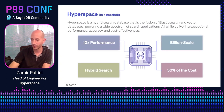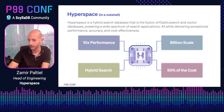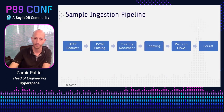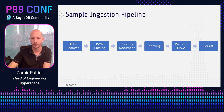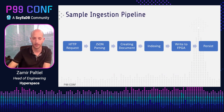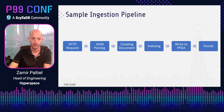Hyperspace is a fully managed hybrid search database designed to make search faster, more cost-effective, and scalable — meaning we are obsessed with low latency and performance optimization. This is a sample ingestion pipeline, showing the main parts: an HTTP request comes in, we get a JSON, we parse it, we create some classes and documents, add them to our inverted indexes, write the data to FPGA memory, and then persist it to disk. These are steps that perform one after another, and we want to find the bottlenecks.